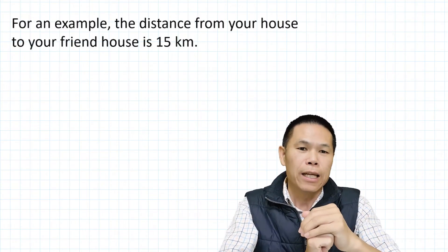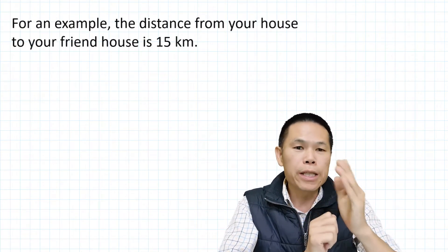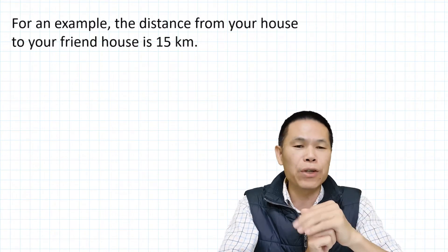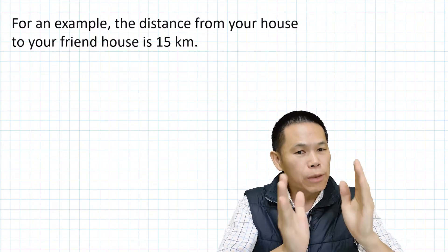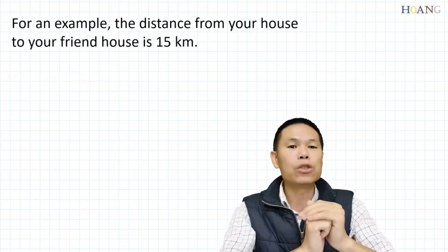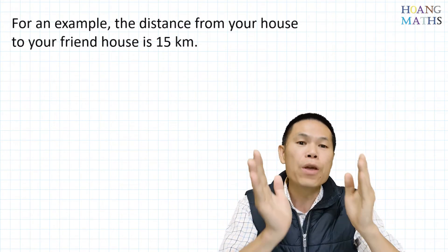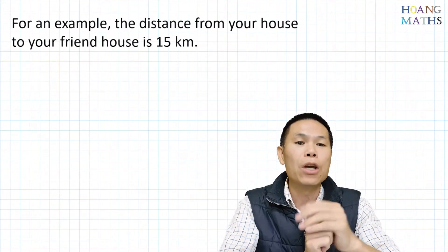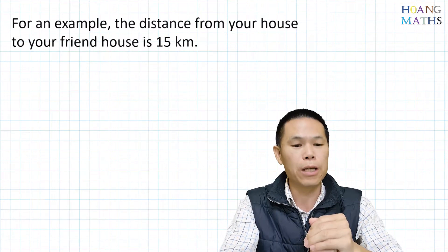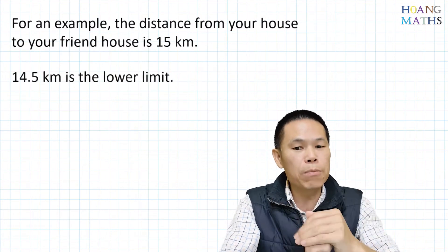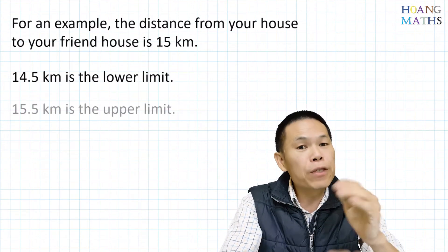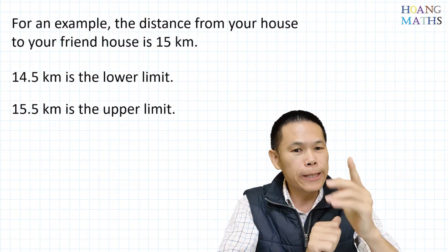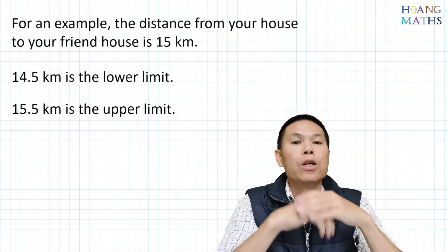It is impossible for us to measure exactly. For example, the distance from your house to your best friend's house is 15 kilometers. This means that the actual distance could be anything from 14.5 kilometers to 15.5 kilometers. We call 14.5 kilometers the lower limit and 15.5 kilometers the upper limit.